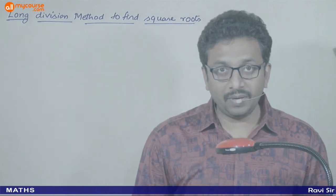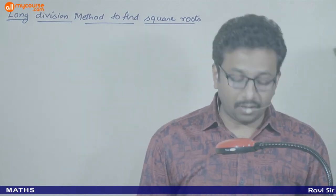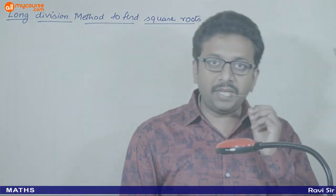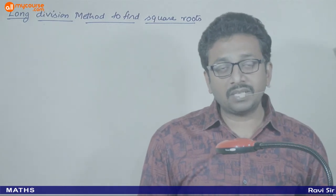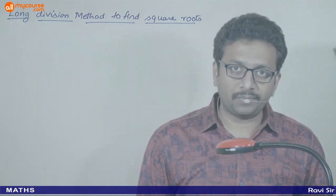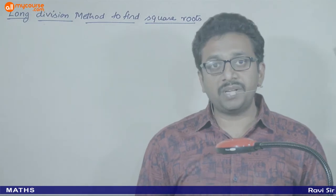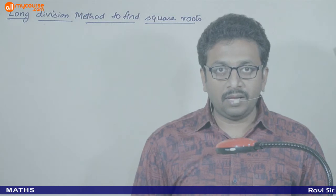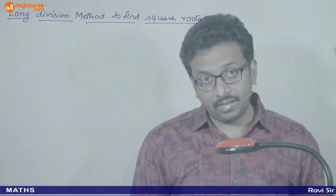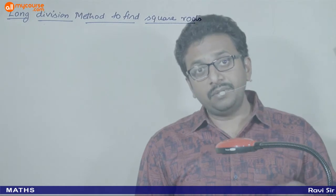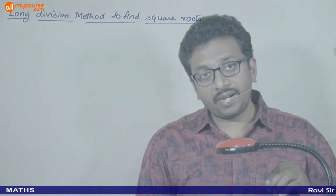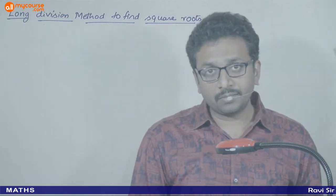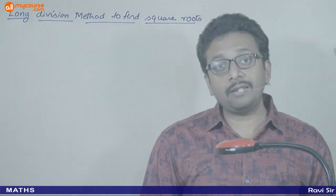Hi students. In this video, let us look at the topic of long division method to find square roots. If a general number is given, we already know the method of prime factorization. If a perfect square is given, you can do prime factorization and find the square root. Now let us look at another method, which is more general than the prime factorization method.